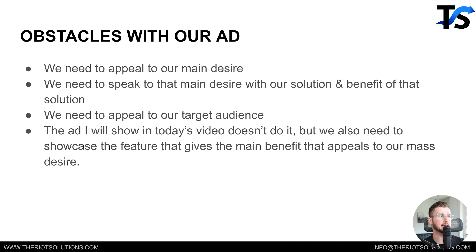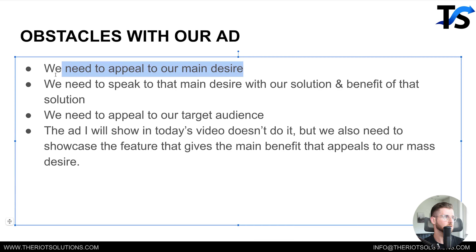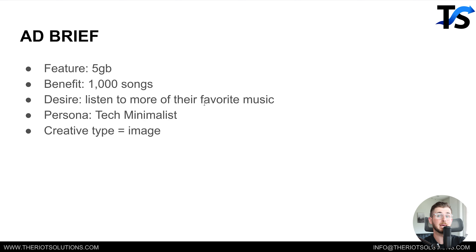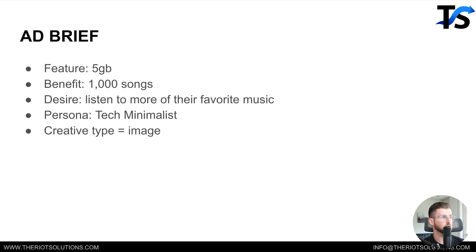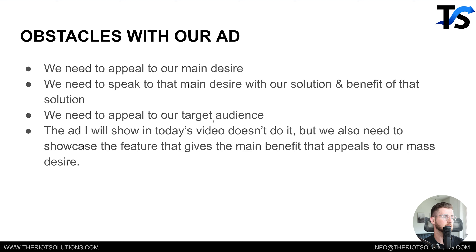Let's look at a couple of obstacles we need to overcome with this ad. First, we need to appeal to our main desire — listening to more of their favorite music. We can do this two ways: state the desire, or state the solution that gives them that desire. Next, we need to speak to the main desire and the benefit of our solution. We also need to appeal to our target audience: tech minimalists who have a desire to listen to more of their favorite music. And ideally we need to showcase the feature that gives the main benefit that appeals to our main desire — showing the five gigabytes.